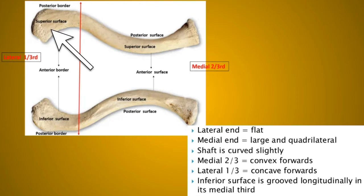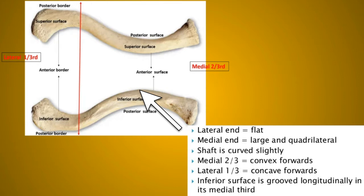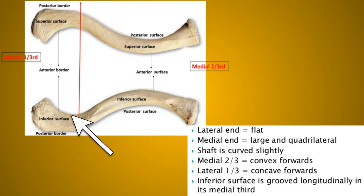The lateral end of the clavicle is flat and the medial end is large and quadrilateral. The shaft of the clavicle is slightly curved — it is convex forwards in its medial two-third area and concave forwards in its lateral one-third area. Remember: medial two-third convex forwards, lateral one-third concave forwards. Also, the inferior surface of the clavicle is grooved longitudinally in its middle one-third area.